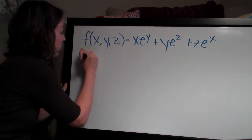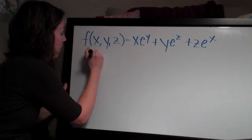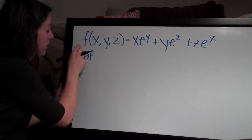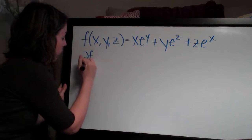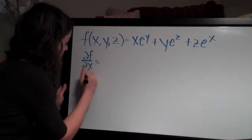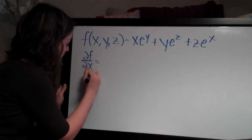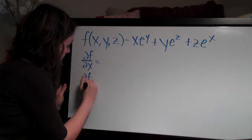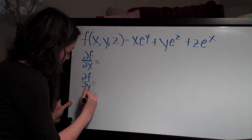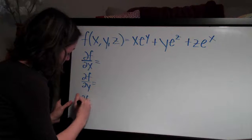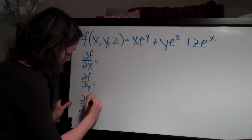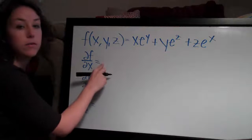The notation looks like this: the partial derivative of f with respect to x, then the partial derivative of f with respect to y, and then the partial derivative of f with respect to z. So those are our three parts.